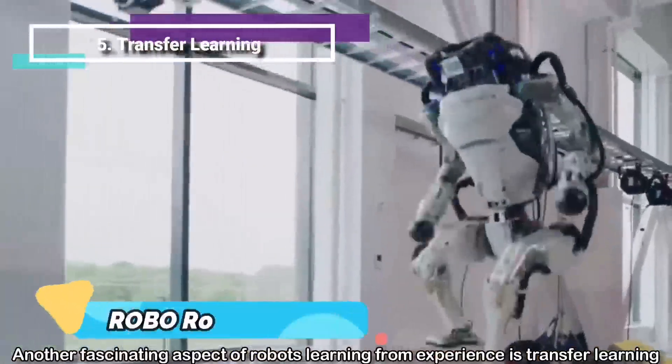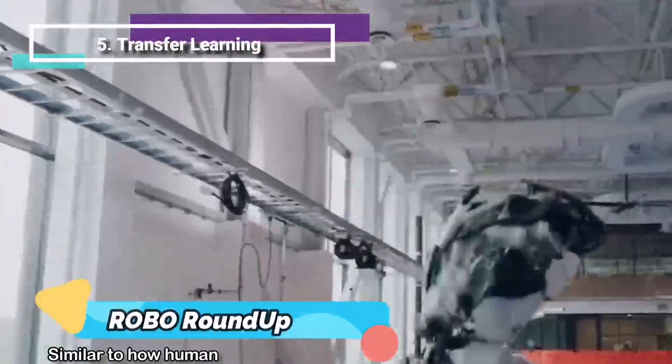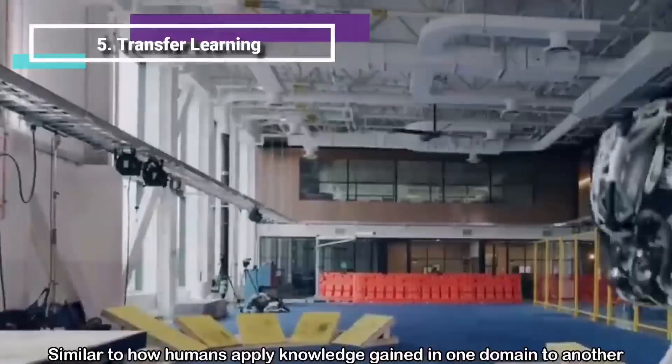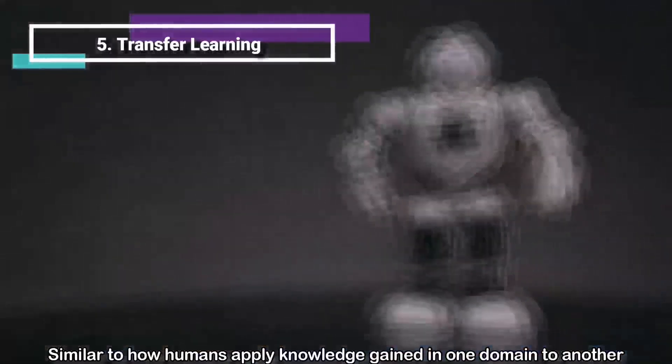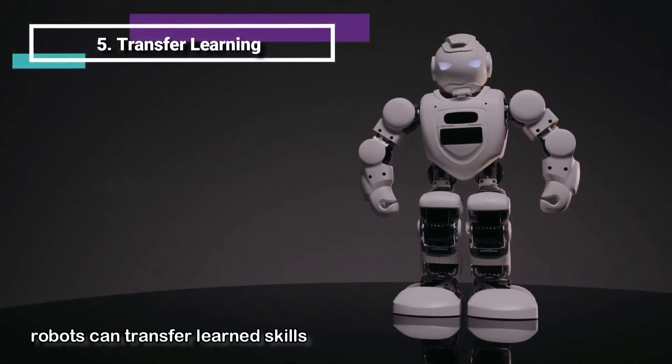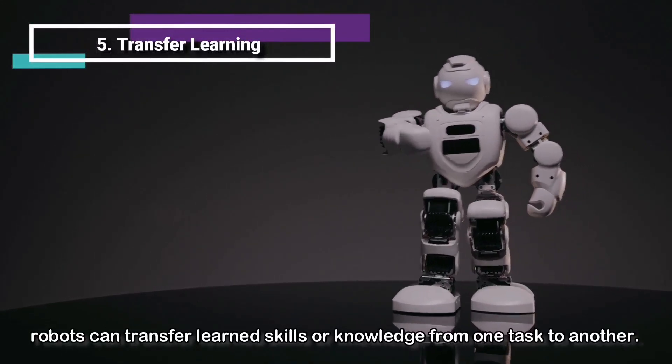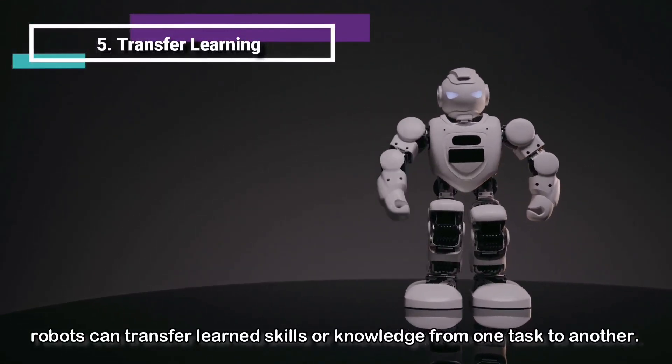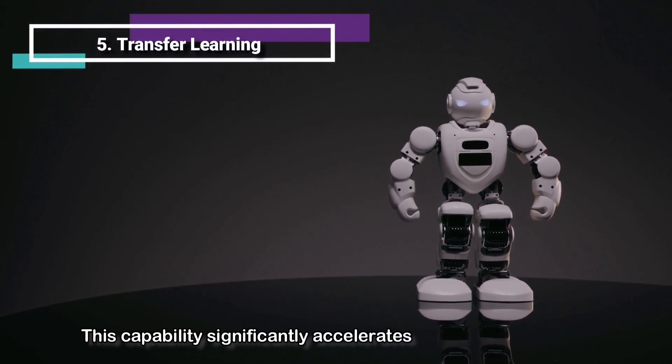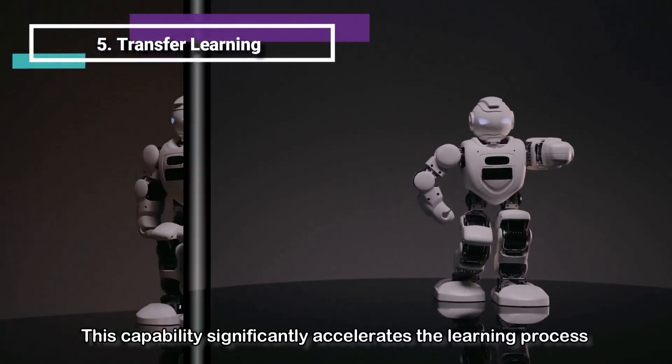Number five: transfer learning. Another fascinating aspect of robots learning from experience is transfer learning. Similar to how humans apply knowledge gained in one domain to another, robots can transfer learned skills or knowledge from one task to another. This capability significantly accelerates the learning process, allowing robots to adapt quickly to new challenges.